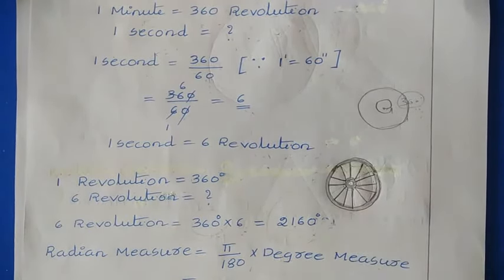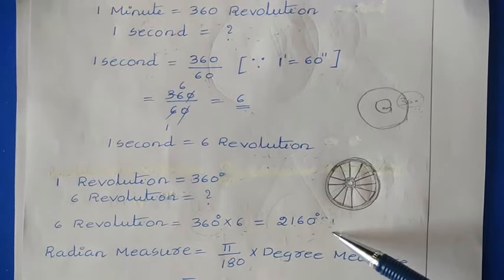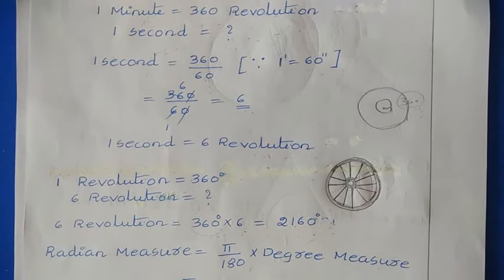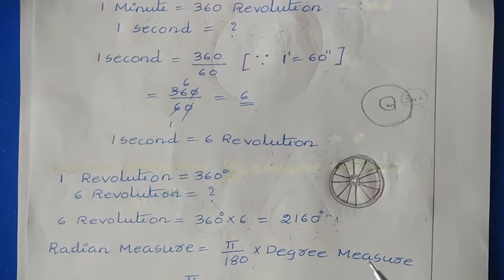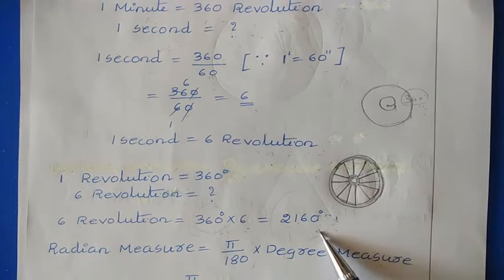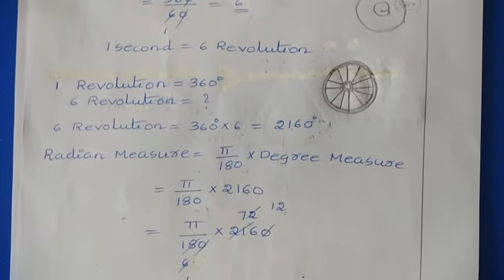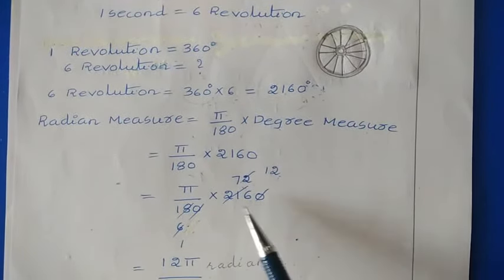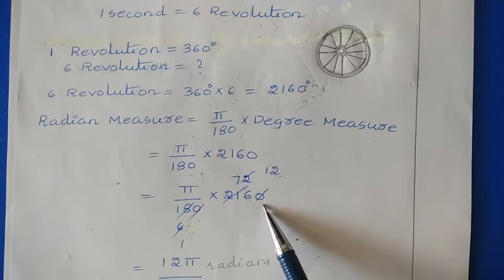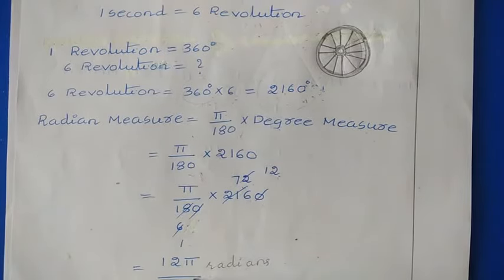The wheel makes a 2160-degree angle in 6 revolutions. But this answer is in degree measure, and the question asks for radians. To convert to radians, use the formula: radian measure = (π/180) × degree measure. So (π/180) × 2160. After cancellation, we get the final answer: 12π radians.